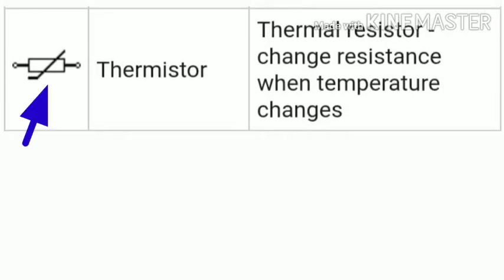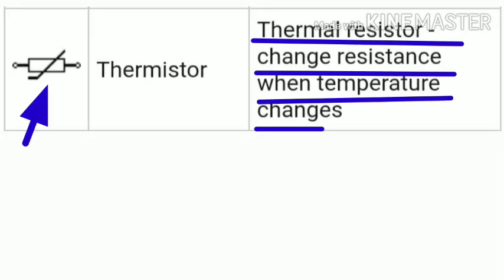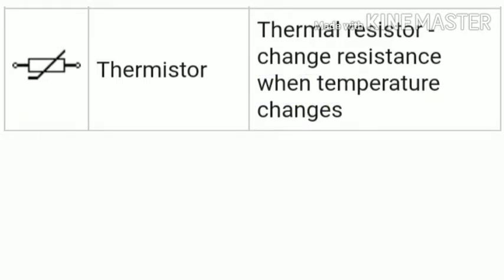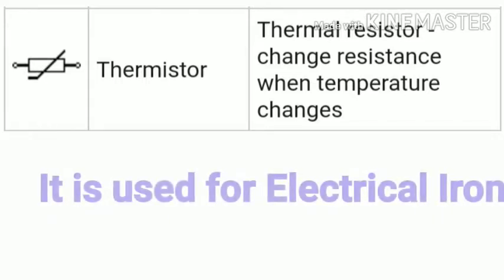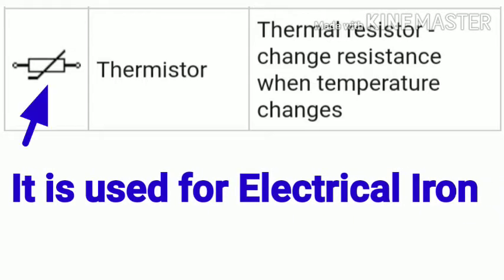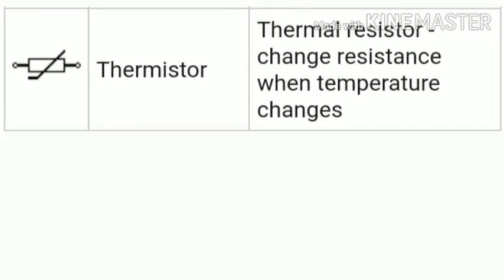The next symbol is the thermistor. The thermistor is a resistor that changes resistance with temperature changes. When the temperature is high, the thermistor auto-switches off. It is used in electrical irons. The thermistor is a temperature-dependent resistor — its resistance changes according to temperature.